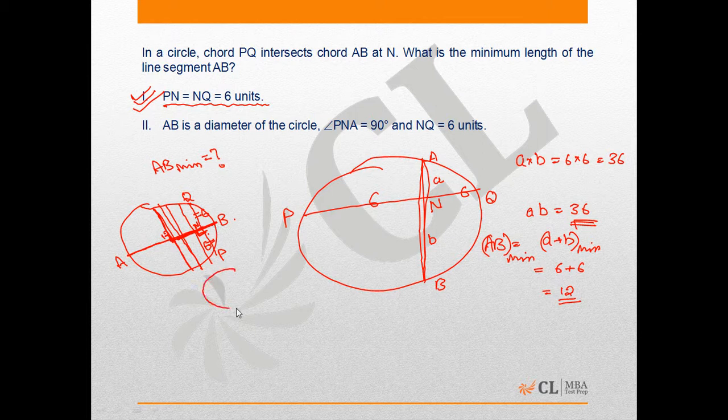I repeat: had this PQ been here, which is of 12, obviously my diameter, which is AB, should be more than 12. Since I want AB minimum, I try to shift this 12 to this side, passing through the center only. So again, I can observe that my minimum length of AB is 12.